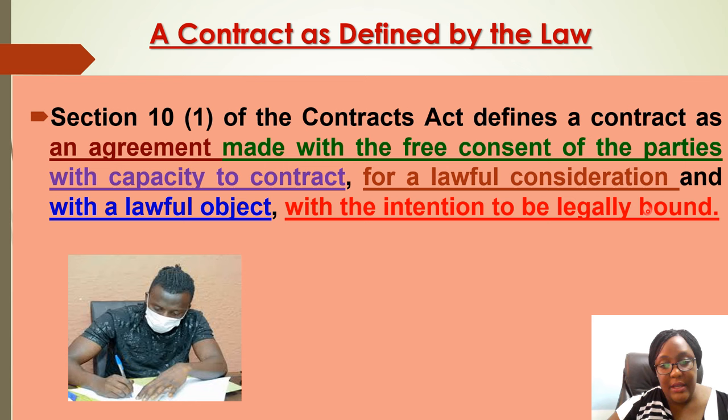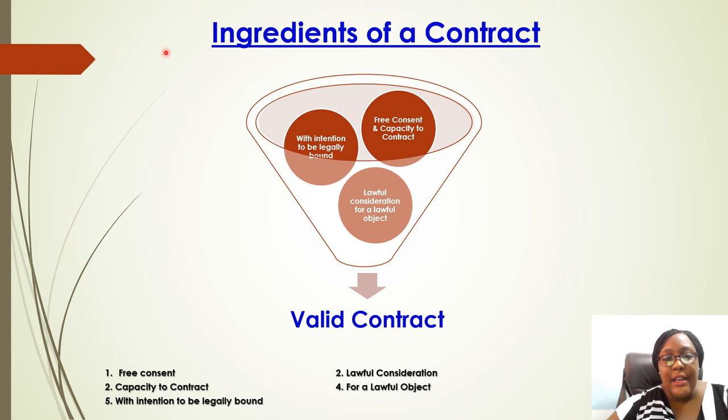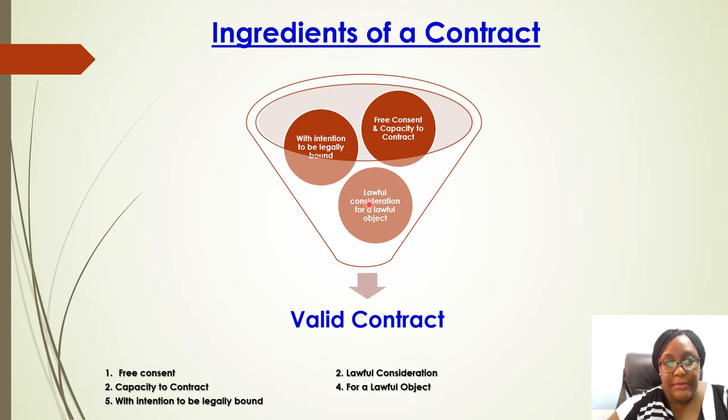When establishing whether something was a valid contract, we look for these elements. A valid contract that can be enforced must generally have these five aspects: free consent, lawful consideration (not illegal), capacity to contract (parties were not minors or intoxicated), contracting for a lawful purpose, and a lawful object.